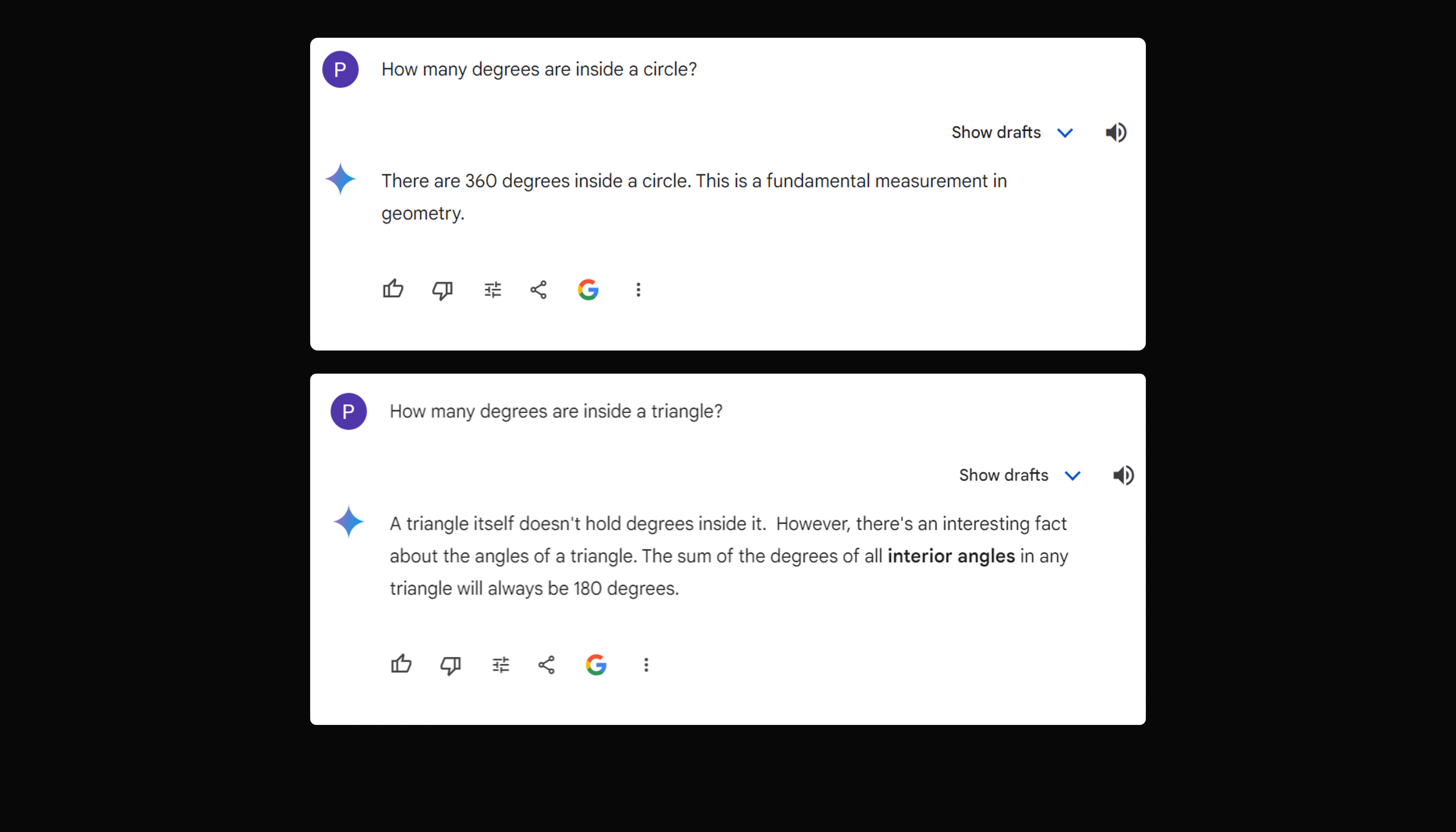However, there's an interesting fact about the angles of a triangle. The sum of the degrees of all interior angles in any triangle will always be 180 degrees. So if you look at Gemini, which is based on a large language model, it was actually able to parse out that the degrees inside a circle are different than the degrees inside a triangle. And it was able to come up with the right answer.